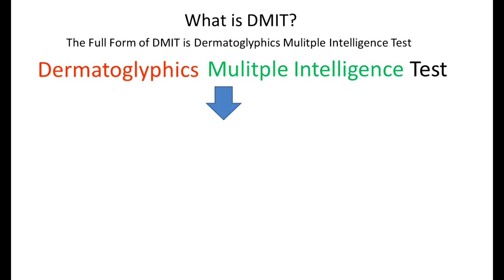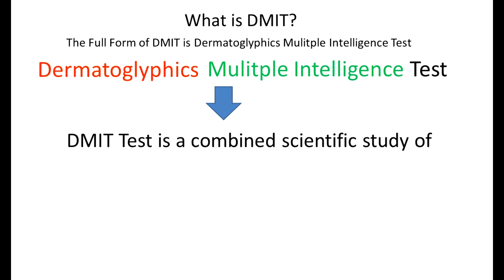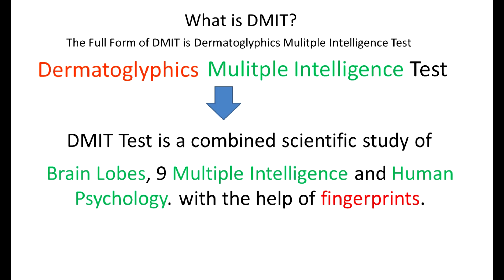To summarize, the DMIT test is a combined scientific study of brain lobes, nine multiple intelligences, and human psychology which we address in counseling. This entire study is conducted with the help of fingerprint patterns, which form the basis of the DMIT report.